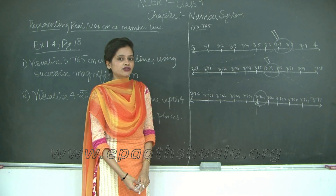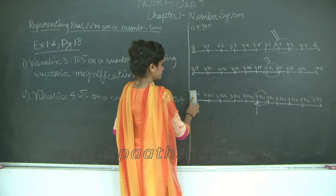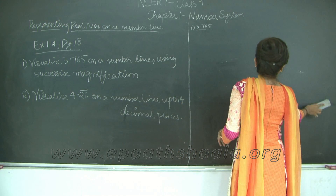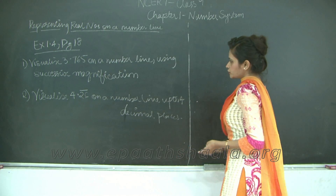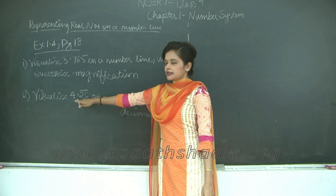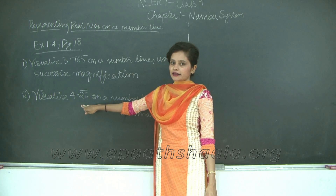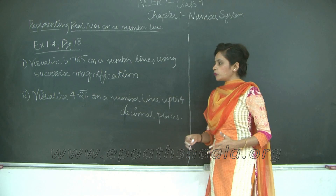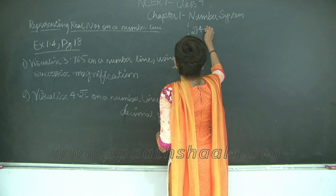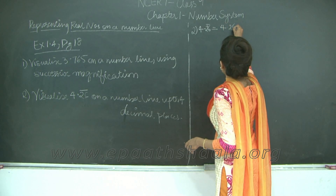Please take a look before we proceed with the second question. My second question is: Visualize 4.26 bar on a number line up to 4 decimal places. This is a rational number where 0.26 is recurring after the decimal — it is a non-terminating but recurring decimal expansion. So what we really need to plot is 4.2626.